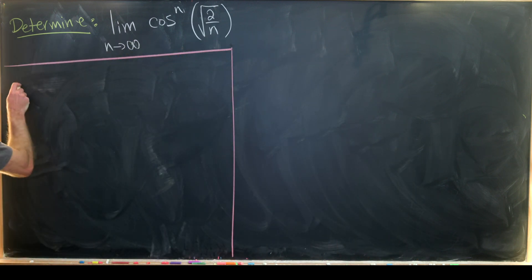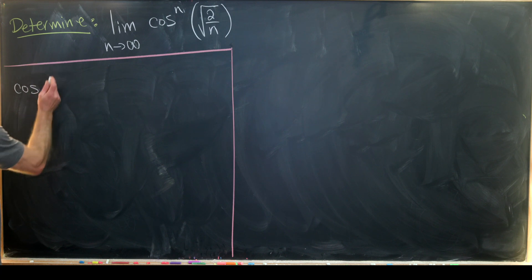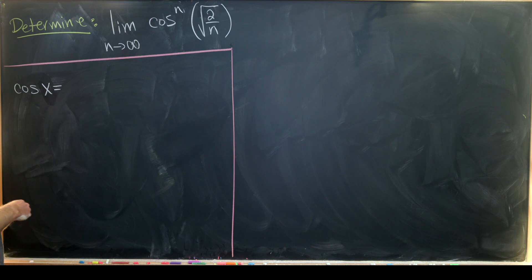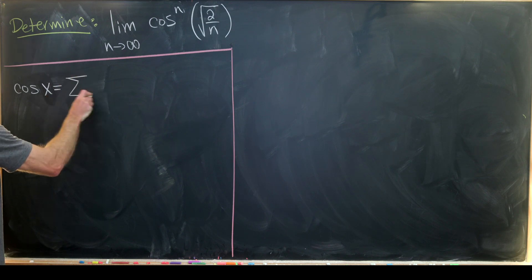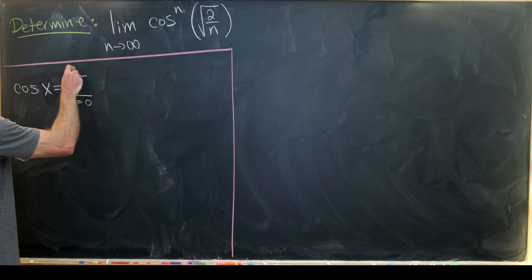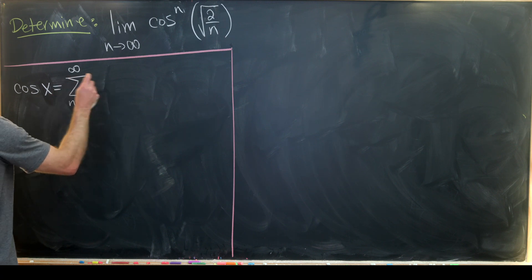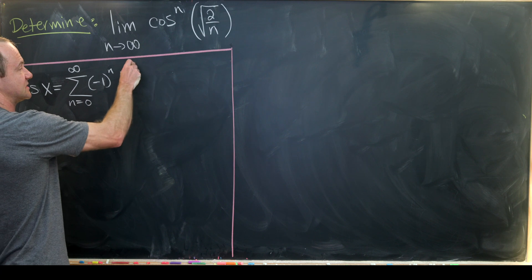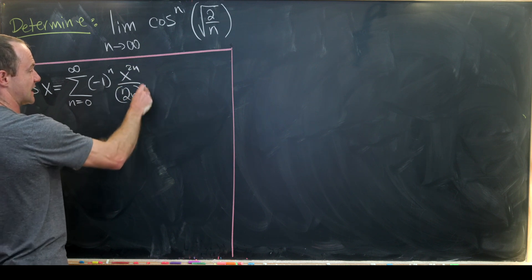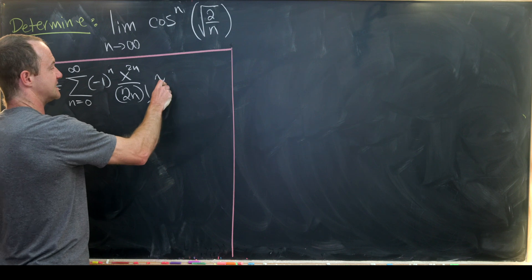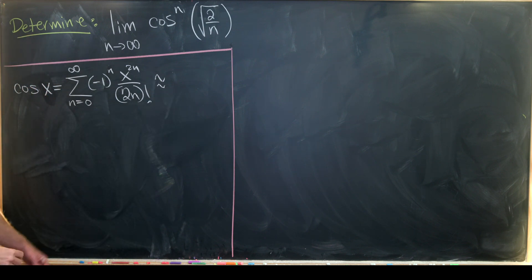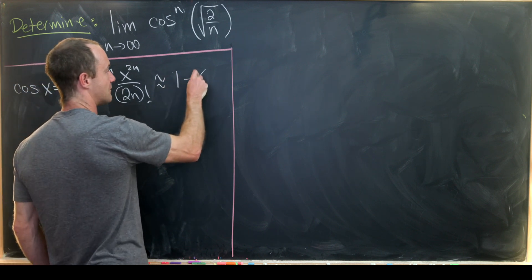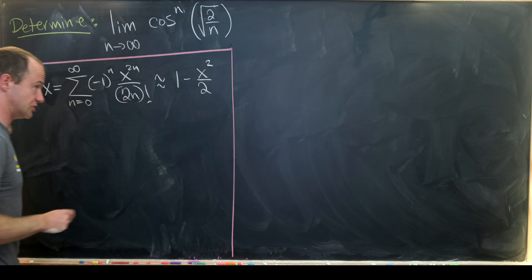Let's start by recalling the Maclaurin expansion — in other words, the Taylor series expansion centered at x equals 0 of cosine. It's the sum as k goes from 0 to infinity of minus 1 to the k times x to the 2k over 2k factorial. If we take a quadratic approximation — a two-term approximation — that leaves us with 1 minus x squared over 2.